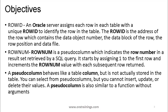Let us understand what ROWID and ROWNUM are. ROWID comes into the picture whenever you insert any record into an Oracle Database table — you always get a unique number generated by the Oracle server. It is the address of a particular record, a kind of key which identifies a particular record in a particular table. For every record, you will have a ROWID which is unique across your database.